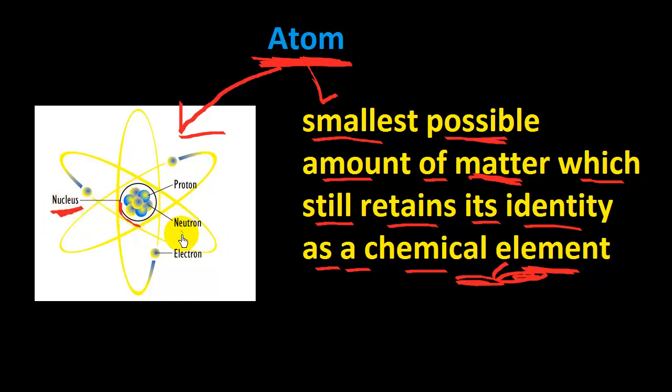Neutrons inside, protons and on the outside electrons, electrons spinning around. So it's a small thing in science.